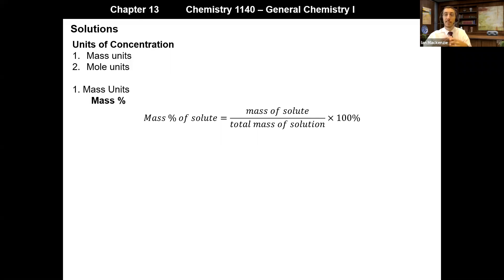The first is mass percent. This is defined as the mass of the solute divided by the total mass of the solution times 100%. This is exactly similar to any mass percent we did back in Chapter 3 when we were doing combustion analysis or anything like that — it's just now we're dealing in solutions.